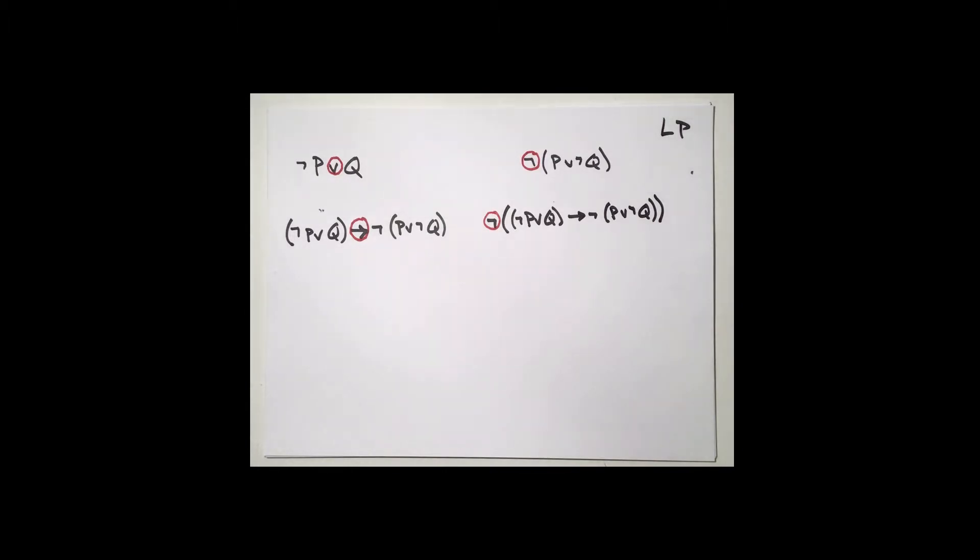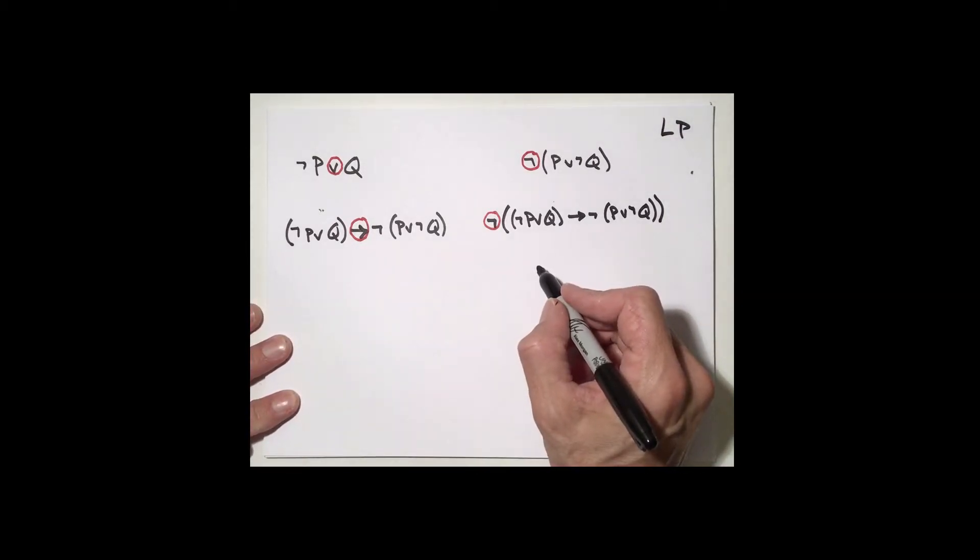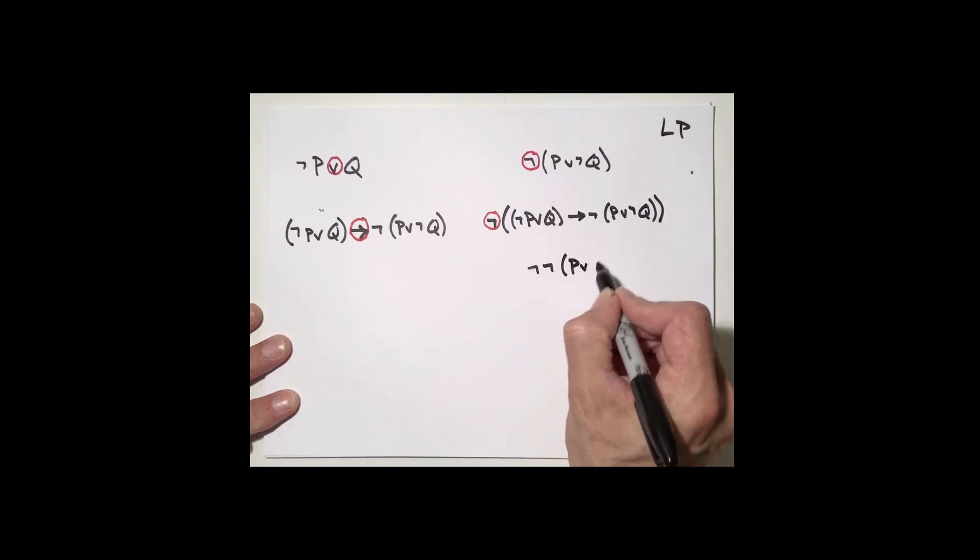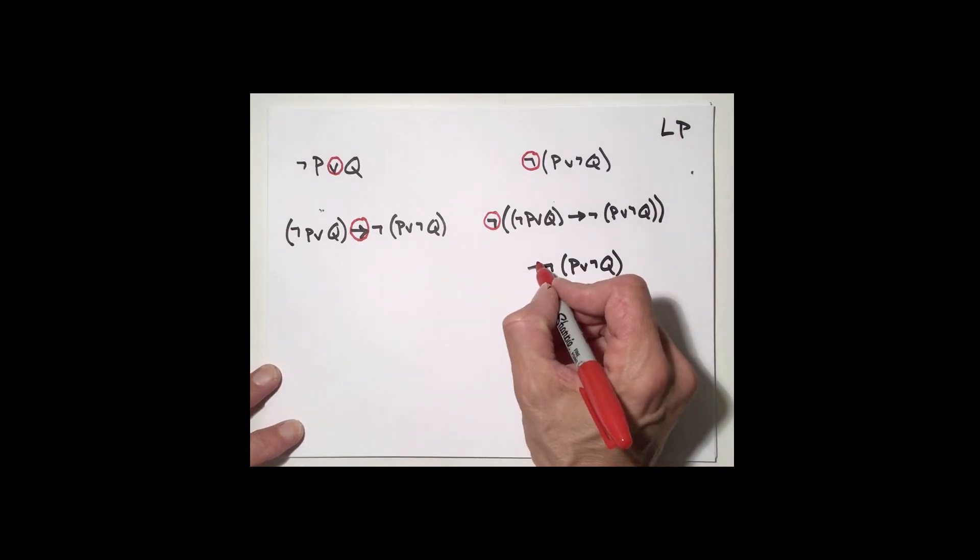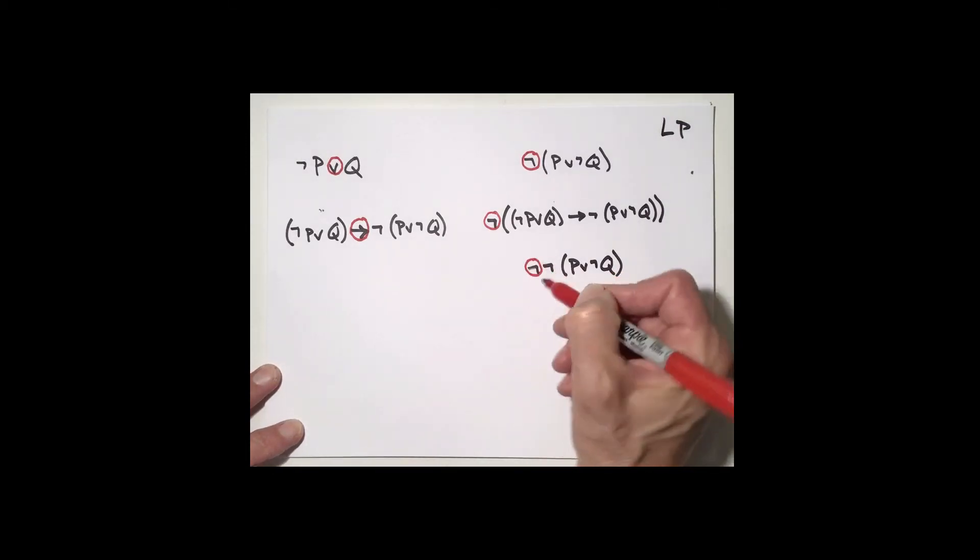There's only one other case that we might consider where the logical connective might seem just a tiny bit tricky. And that is, what if we have a sentence like this? Suppose I have not, not P or not Q. And again, we've seen the sentences like this can come up in a truth tree when we're decomposing some other sentence. And here, of course, the main logical connective is the leftmost negation symbol.